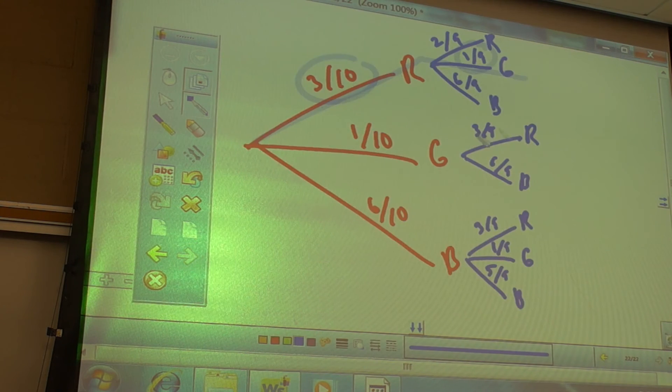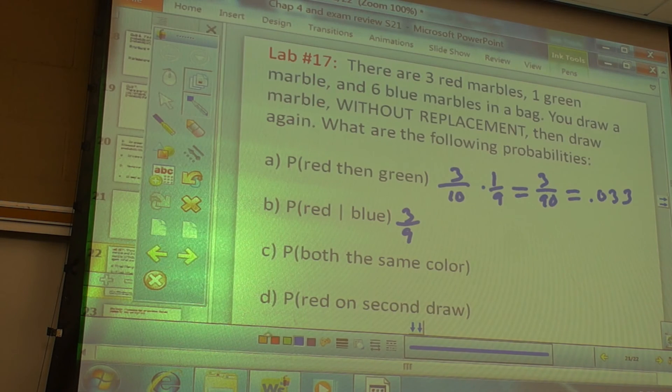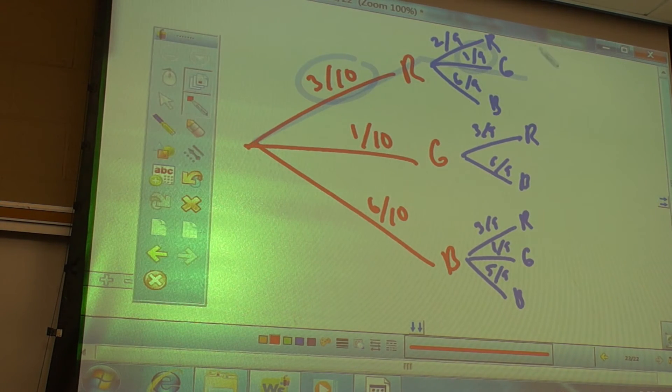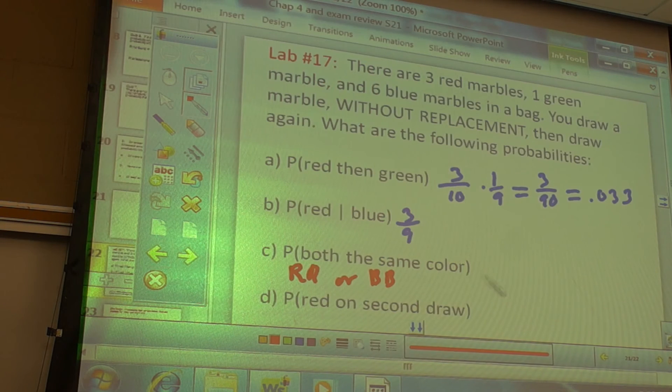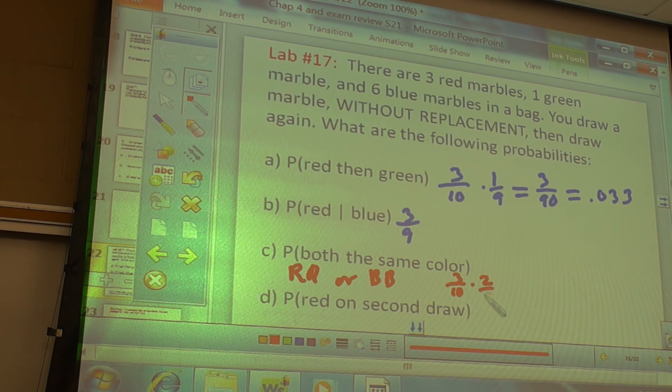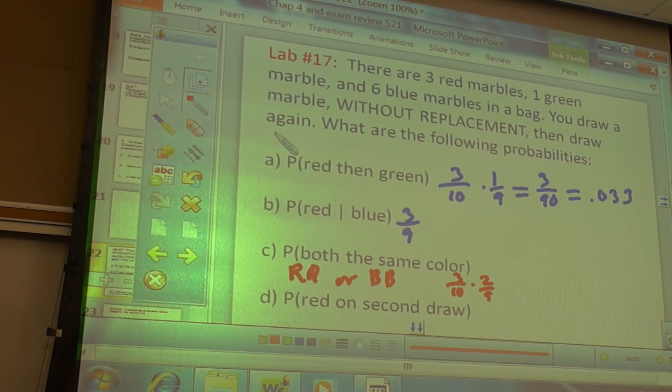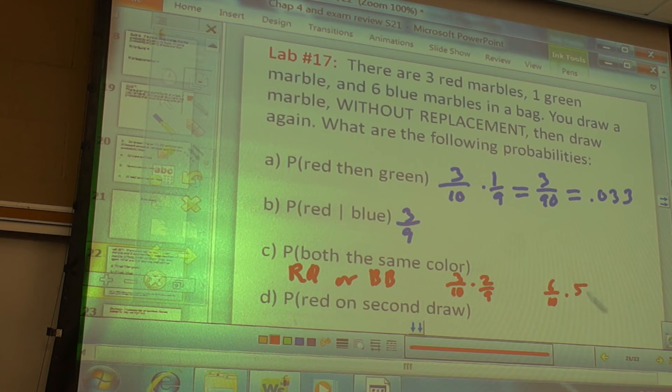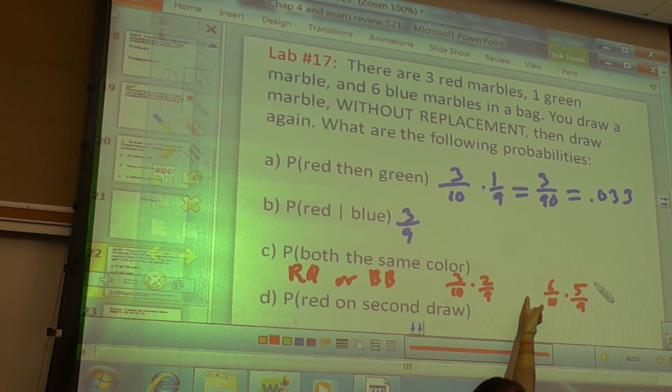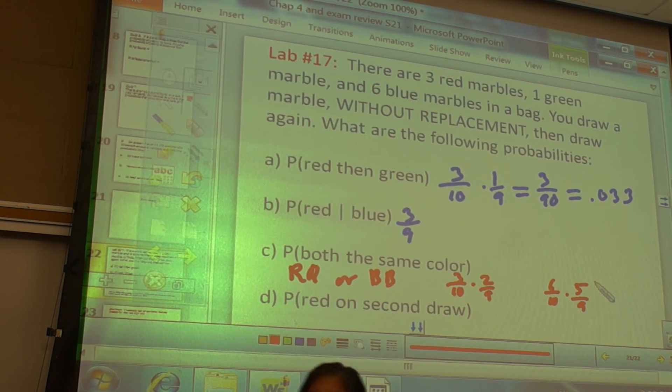All right, both the same color. How can I do that? How can I do that? So that means it's red, red or blue, blue. Because you can't do green, green. Does anyone know what I care about that part? Yeah. Green, green is impossible. So red, red is three tenths times two ninths. Blue, blue is six tenths times five ninths. Now here's a question. Is it red, red and blue, blue? Or red, red or blue, blue? Or. Or. Or as we what? And. Add. We're going to add these two. Or as we add. So again, or as we add. And as we what? Multiply. So it's red and red. Or blue and blue.